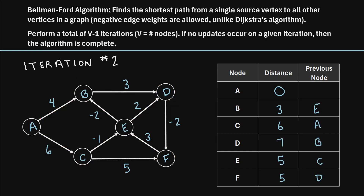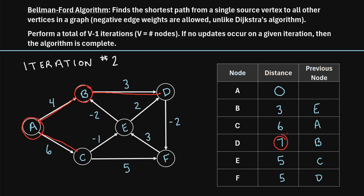Now we move on to the second iteration, repeating the whole process. Starting at node A: A to B is four, not shorter than three — no update. A to C is six, not shorter than six — no update. Moving to node B, which now has a distance of three. B to D is a distance of three, so three plus three is six. Six is shorter than the current distance of seven for D, so we update D to six. The previous node remains B.